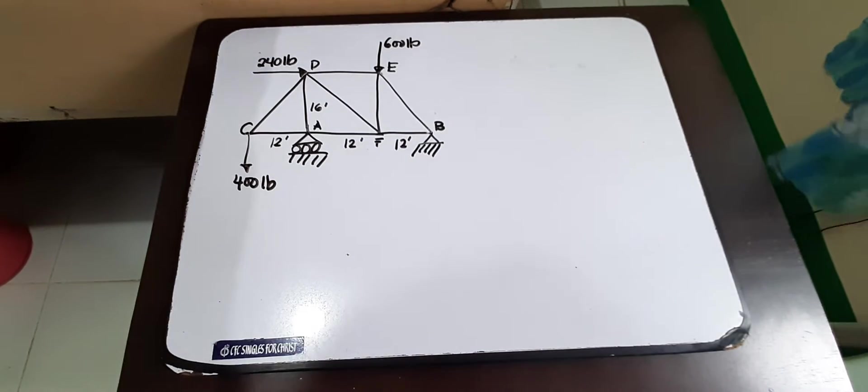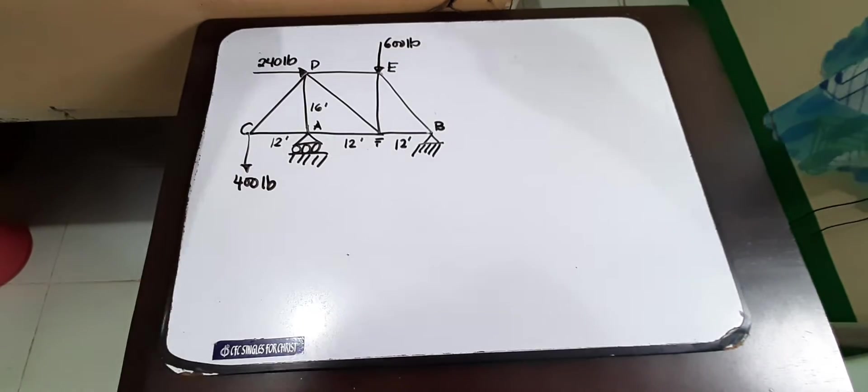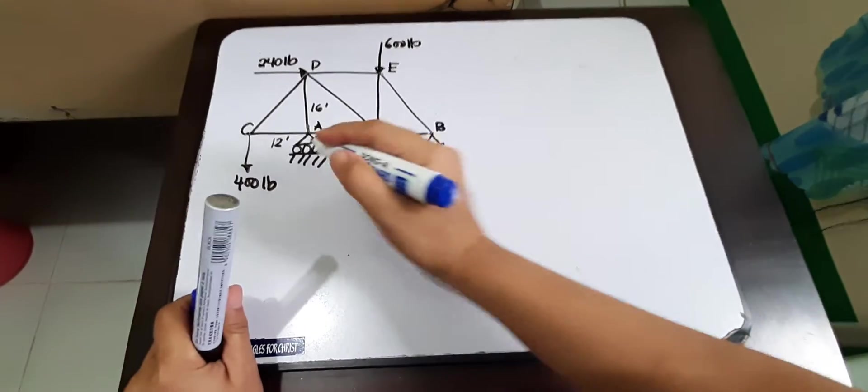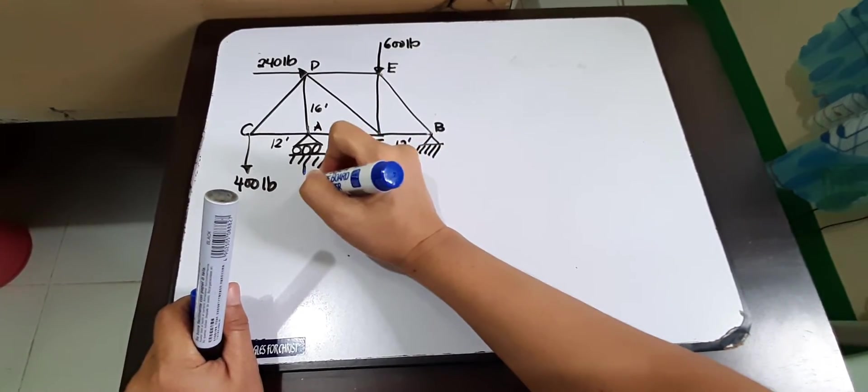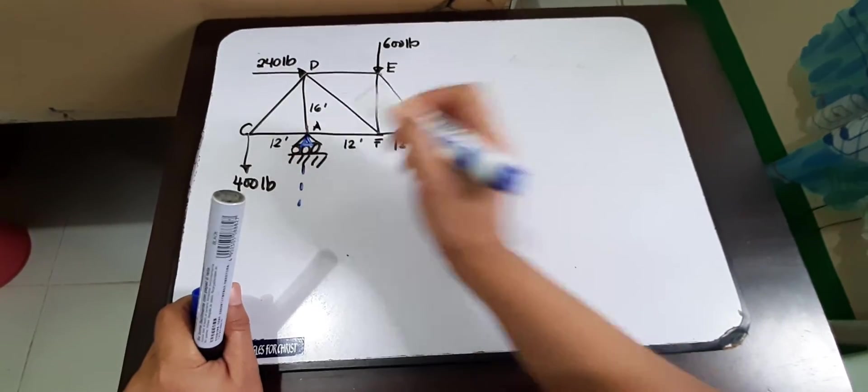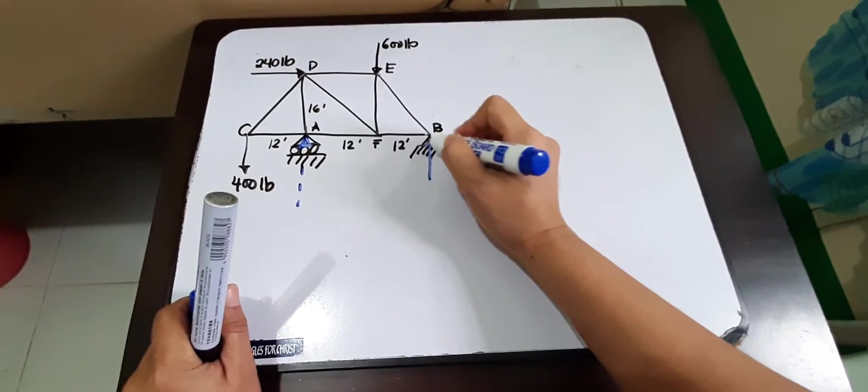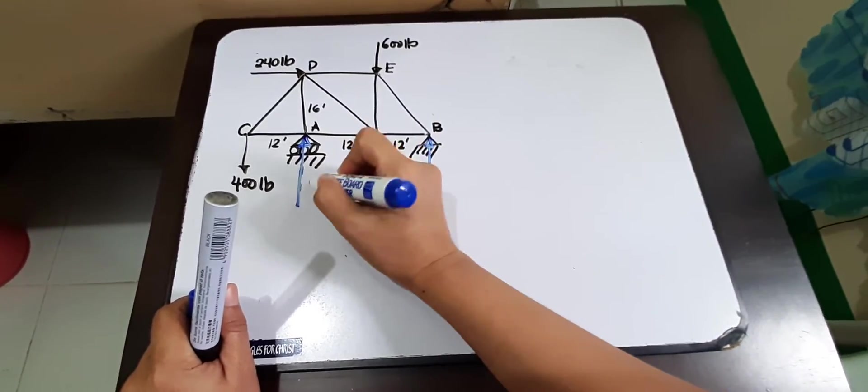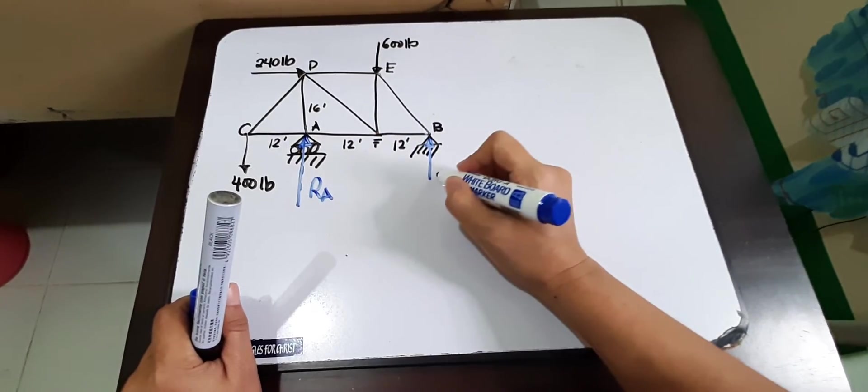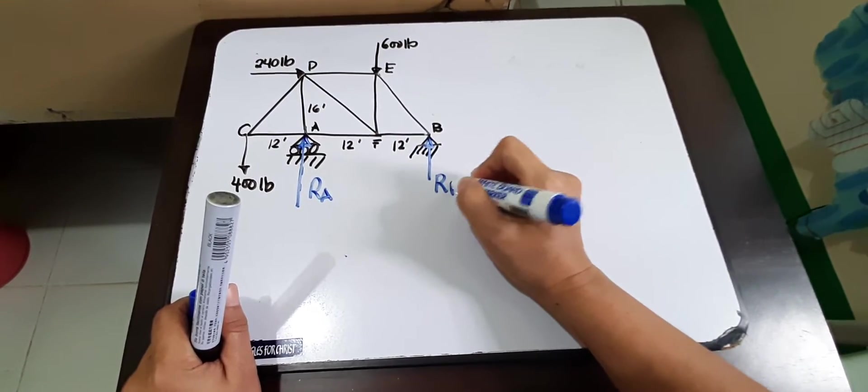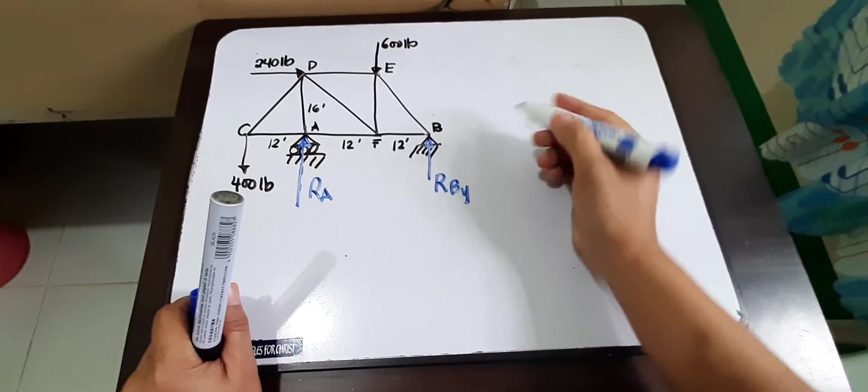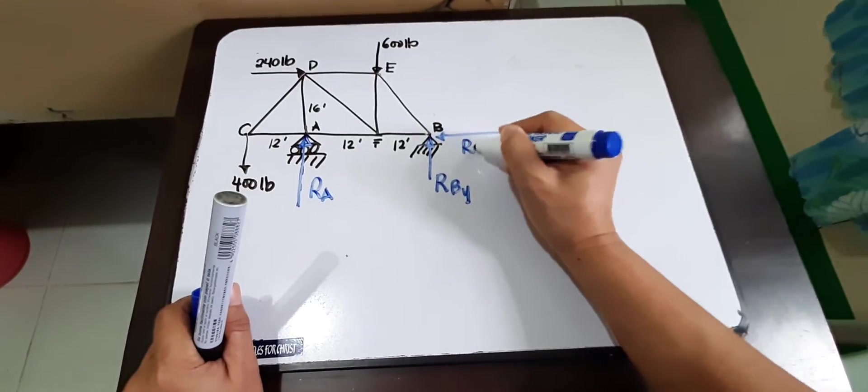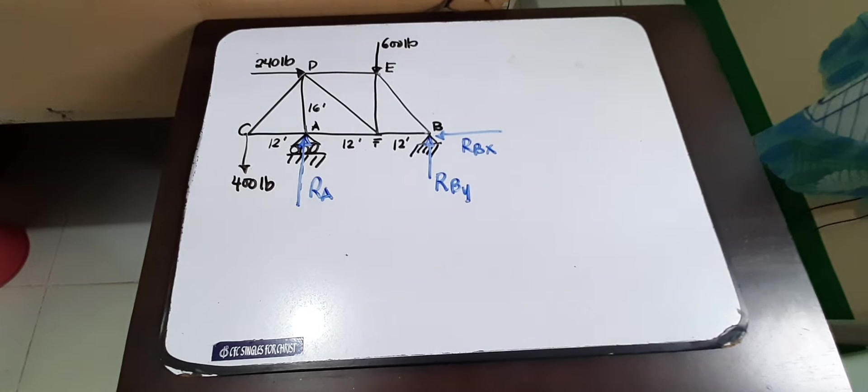So if we are going to draw the reactions for A and B, we'll assume a direction. This is our RA, and this will be RB Y component and RB X component.